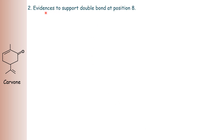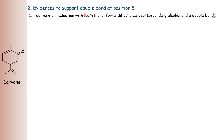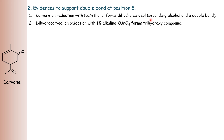Then, evidences to support the double bond at position 8: the first evidence is that carvone upon reduction with sodium in ethanol forms dihydrocarbiol, which is a secondary alcohol with one remaining double bond. That carviol contains a secondary alcohol and there is a remaining double bond.